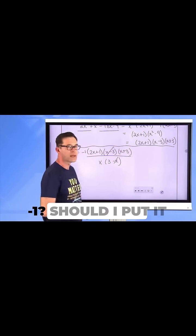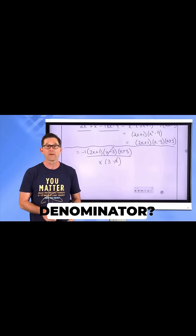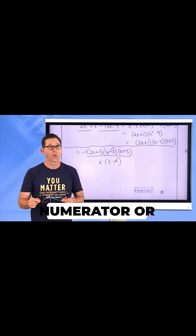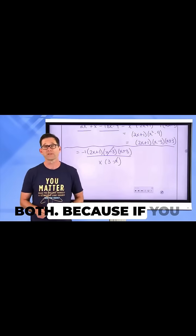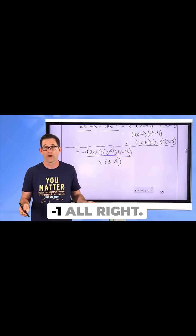Where should I put the negative one? Should I put it in the numerator? Should I put it in the denominator? Should I put it in both the numerator and the denominator? The answer is choose one, either the numerator or the denominator, but not both, because if you put it in both locations, then you're just putting a one there. You're not really putting a negative one.